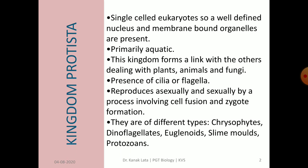Protista are single-cell eukaryotes having a well-defined nucleus and membrane-bound organelles, which were absent in Monera. They are mostly aquatic and this kingdom forms a link with other kingdoms like plants, animals, and fungi. They have locomotory organelles in the form of either cilia or flagella. Reproduction in Protista is either asexual or sexual by cell fusion and zygote formation.